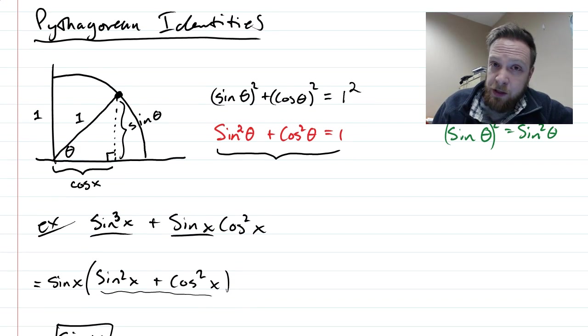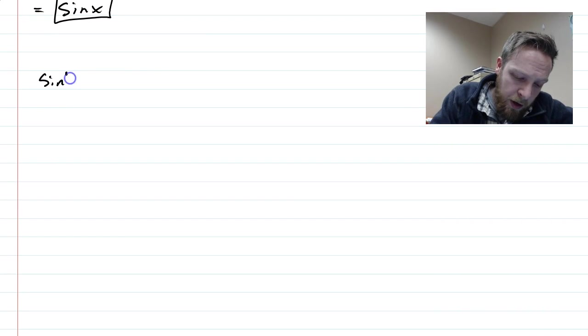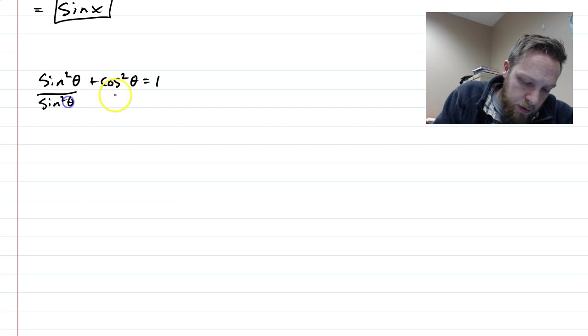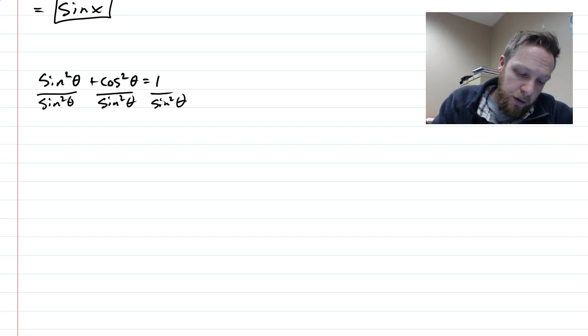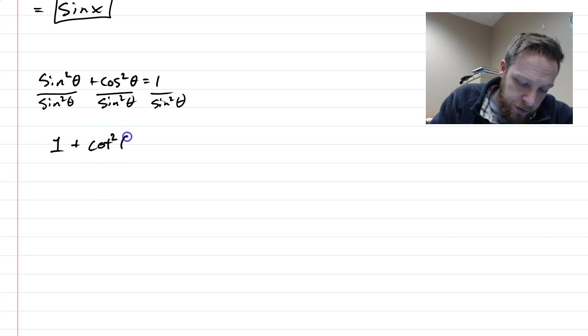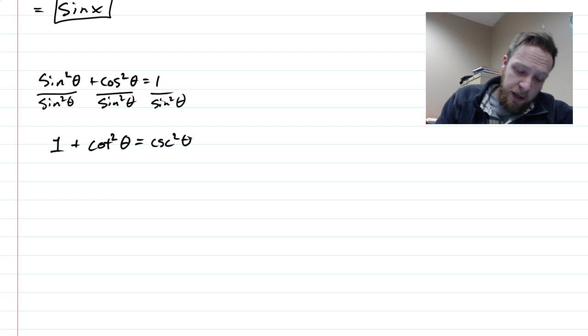Now I just said Pythagorean identities plural, right? So there are two other identities, but they both come from the main one that we just learned. I'm going to show you another one. The way that we get there is we divide everything here by sin² θ. So I'm going to take this, divide all the way across. Now look at these individually. Sin² over sin² is just 1. Now cos over sin is cotangent. And since they're both squared, this would be cot² θ.